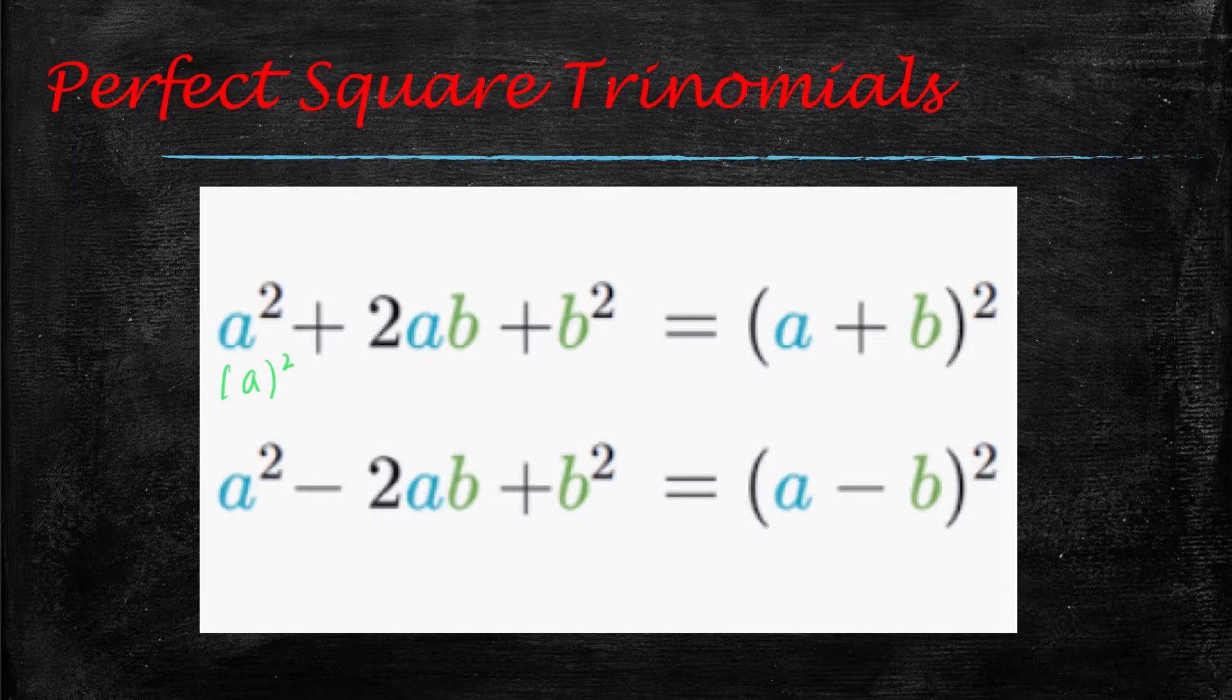and that last term is also going to be a perfect square, and the middle term is when you take that a times b and double it. You'll see that in the middle.